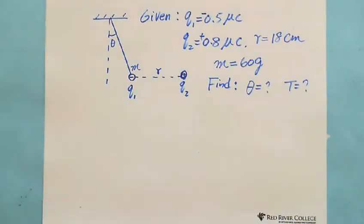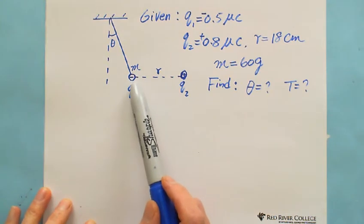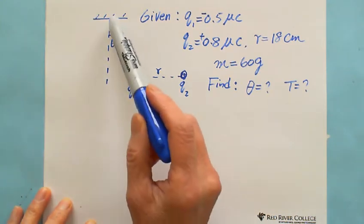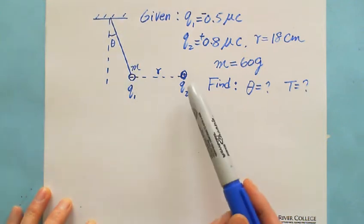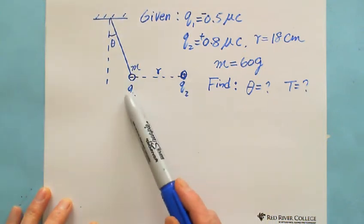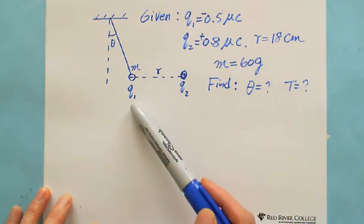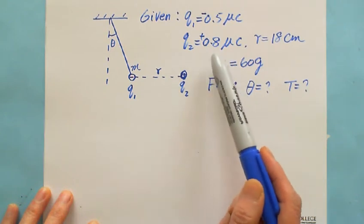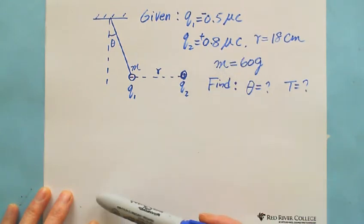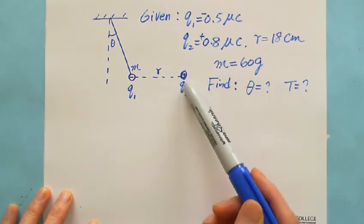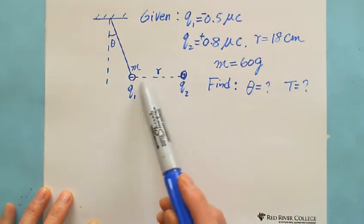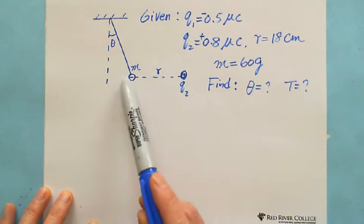This question is talking about a small insulated ball hanging with a thread. The charge is negative 0.5 microcoulomb. The other charge Q2 is positive 0.8 microcoulomb. It's held just right, directly to the right.